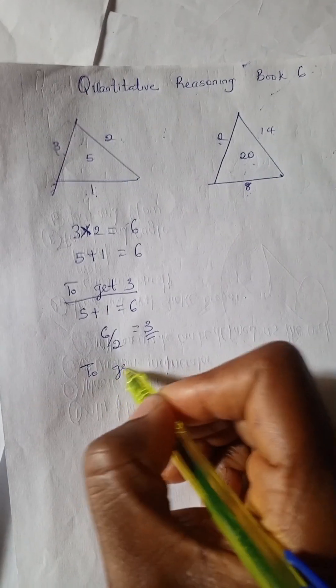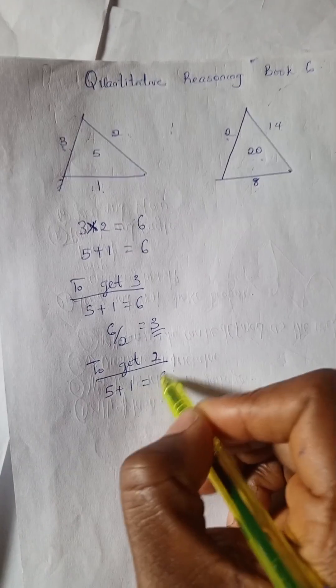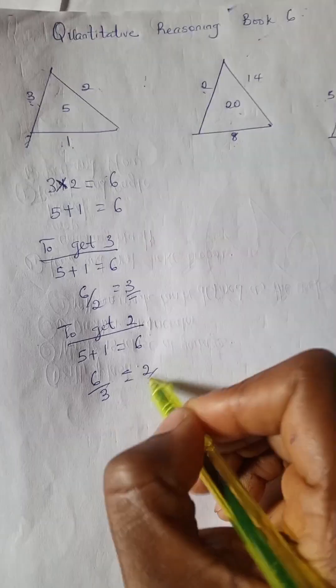To get 2, I'm going to have 5 plus 1 is 6, and 6 divided by 3 is 2.